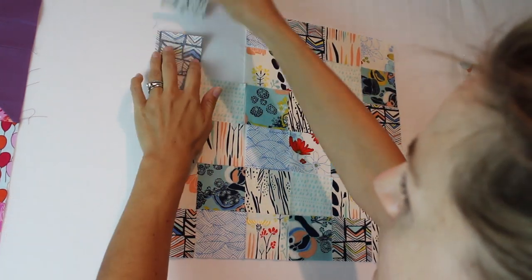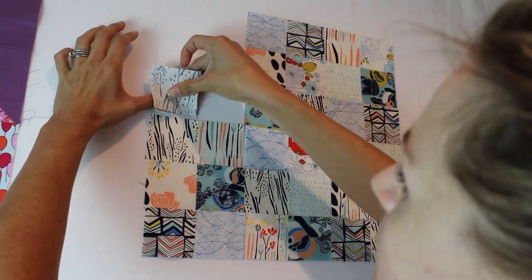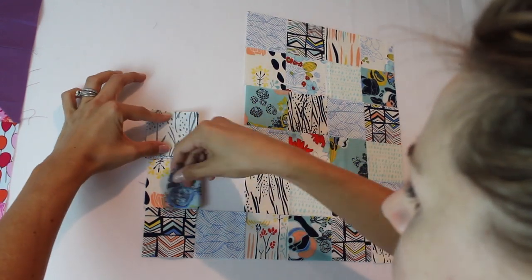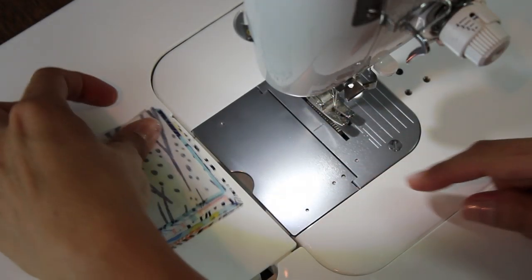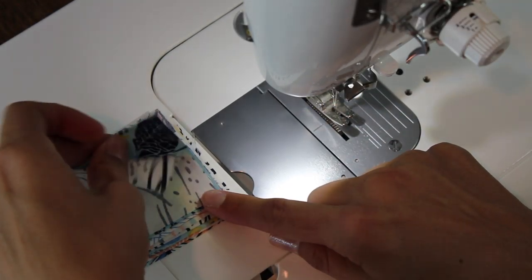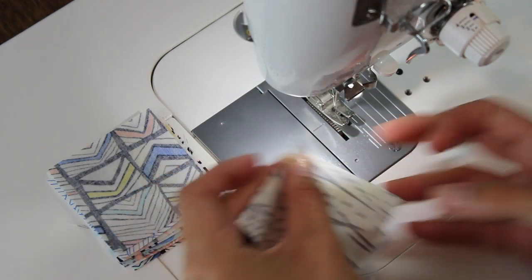So this is how I like to organize my patchwork. Placing right sides together and doing the top piece going all the way down. If you are already familiar with patchwork and you already have your strategy of how to do this, I will link the time code for where to skip ahead to get to the next step right here.